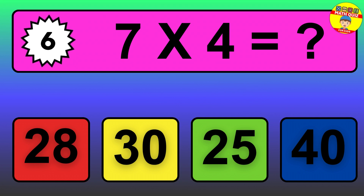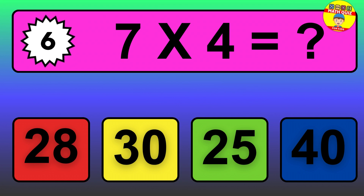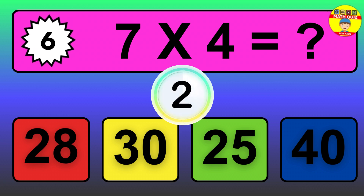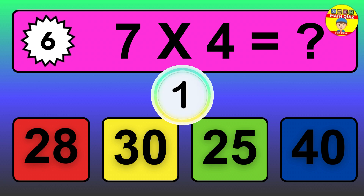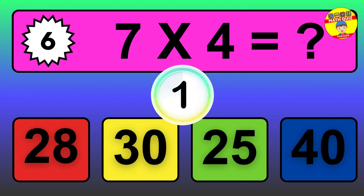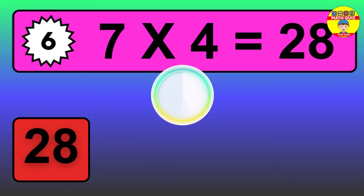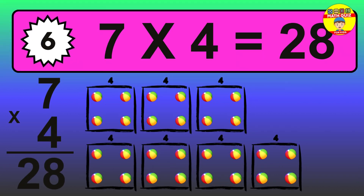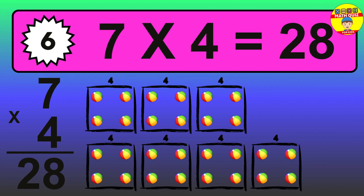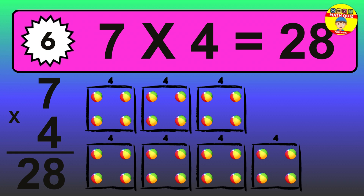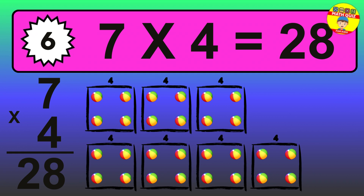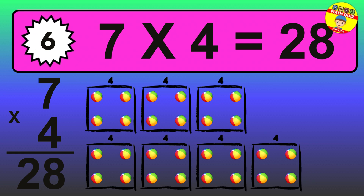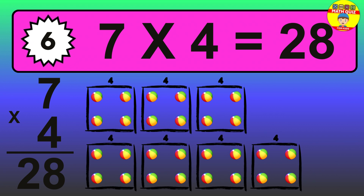Question 6. 7 times 4 equals what? The answer is 7 times 4 equals 28. To calculate, we have 7 groups with 4 balls each one. So, how many balls do we have? 28 balls.